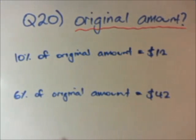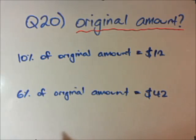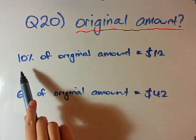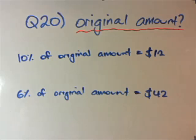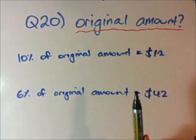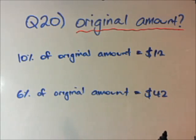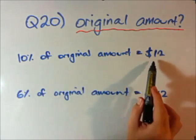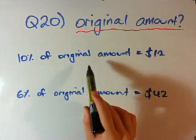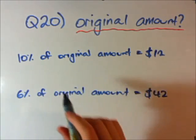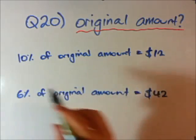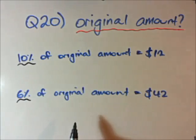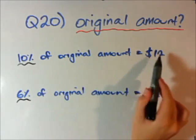Question 20: we're working out what the original amount of some value is when we're given partial information. In this question, 10% of some original amount is $12 — the question is: what was the original amount? The key is that 10% equals $12, and we want to find 100%, because the original amount is what 100% represents.